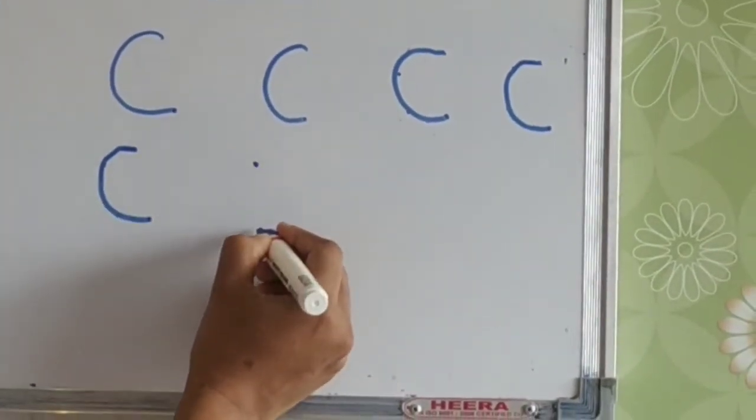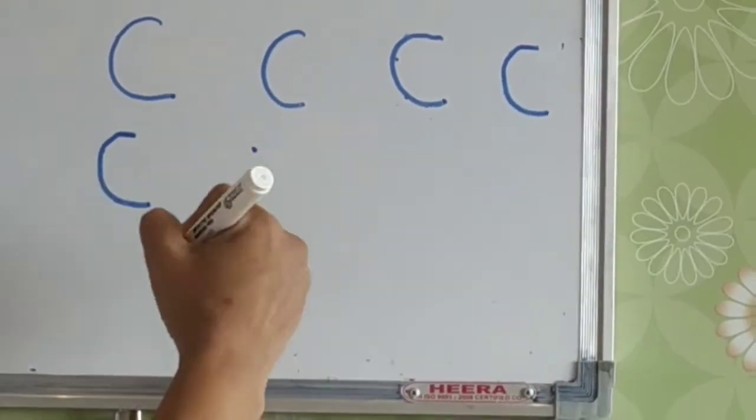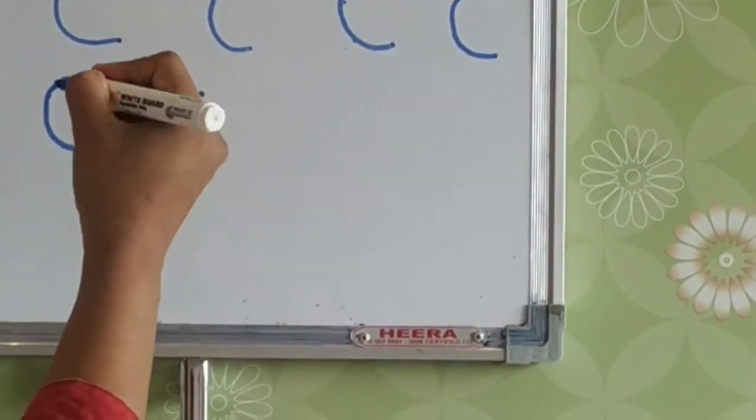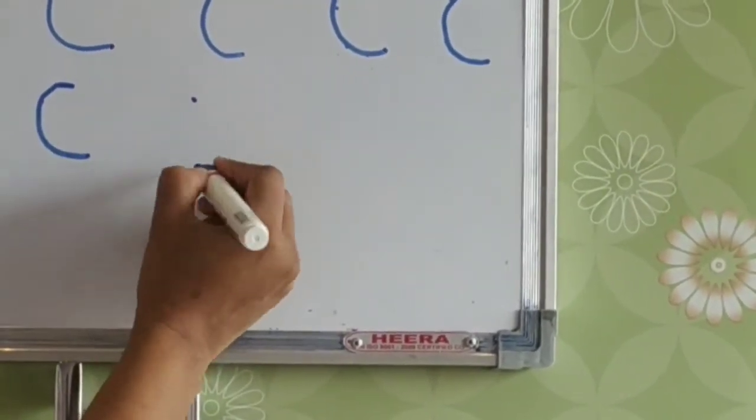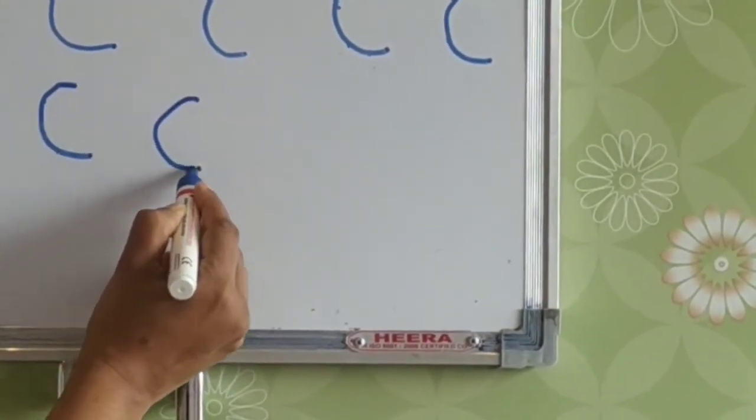Next what you can do is once they can form this, they have got the pattern of writing curve, left curve. You can only put two dots and ask them to form a curve and join this line.